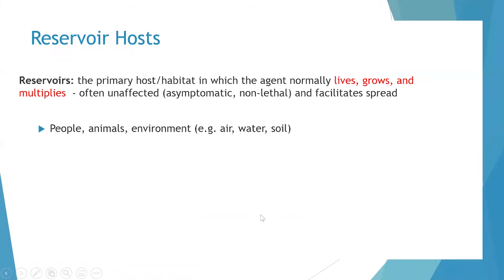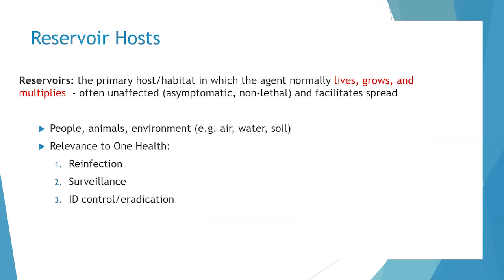Let's talk about reservoir hosts. Reservoirs are the primary host or habitat in which the agent normally lives, grows, and multiplies. They are often unaffected — either asymptomatic or experiencing non-lethal disease — and they often facilitate spread. People, animals, and the environment can all act as reservoirs. Soil-transmitted helminths, for example, are pathogens — in this case worms — that live naturally in soil and are able to affect people. Reservoir hosts are important for reinfection, surveillance, and infectious disease control or eradication.